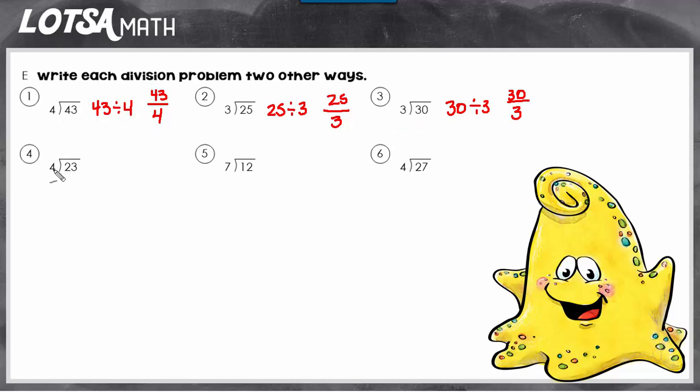We'll do one more, 23 divided by 4 could be written like that, can be written like this, or it can be written like a fraction.